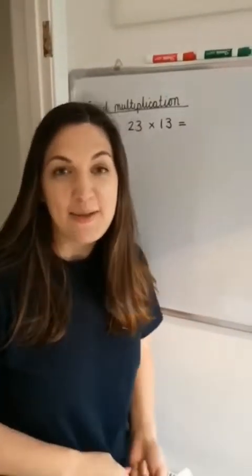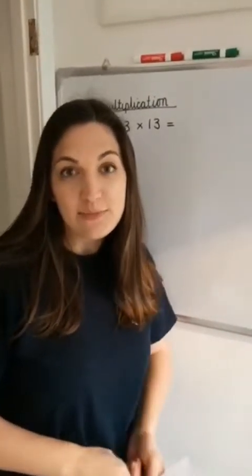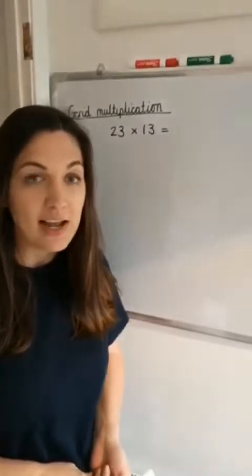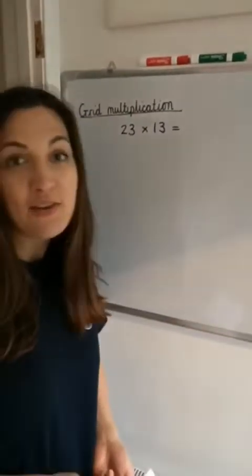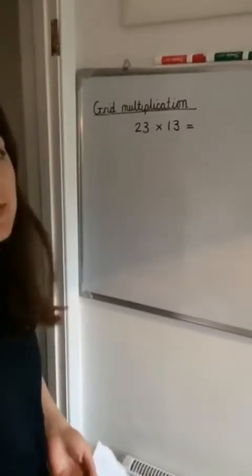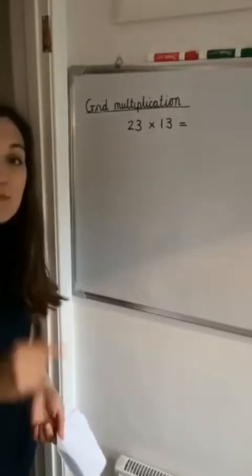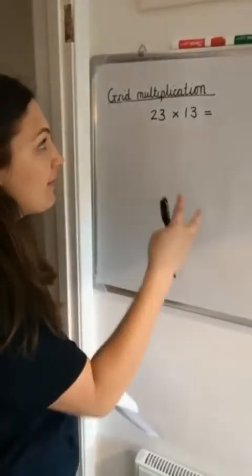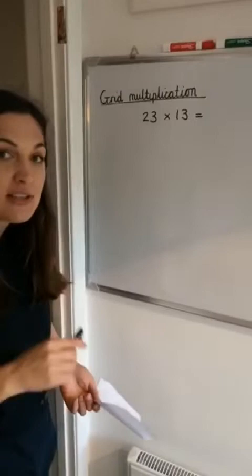Today's virtual math lesson, we're going to be recapping the grid multiplication method that we've done in class. The first question I'd like you to have a go at is 23 times 13, and this one I will model for you. Then we're going to have some at home that you can try by pausing the video.